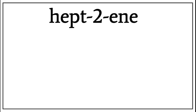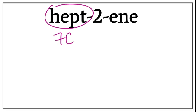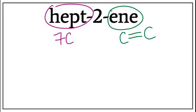Let's draw the structure for hept-2-ene. Hept tells us that there are seven carbons present in the longest carbon chain. Ene tells us that this is an alkene, meaning that there is a double bond between carbons.